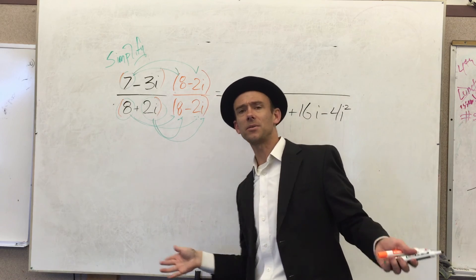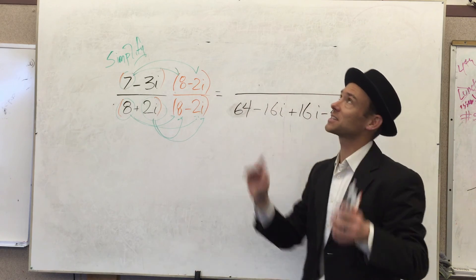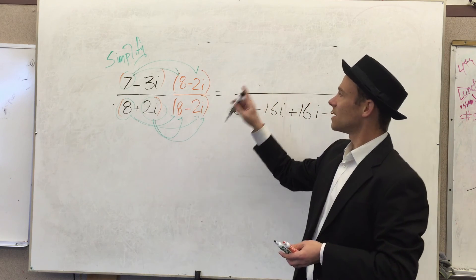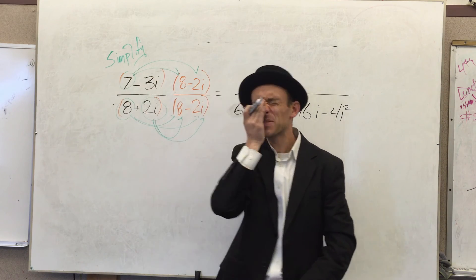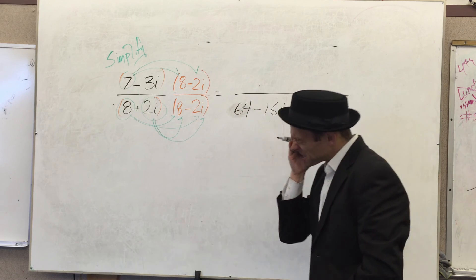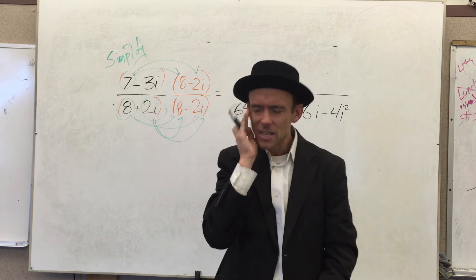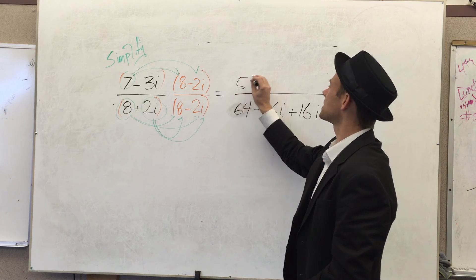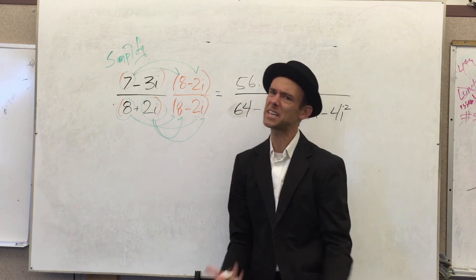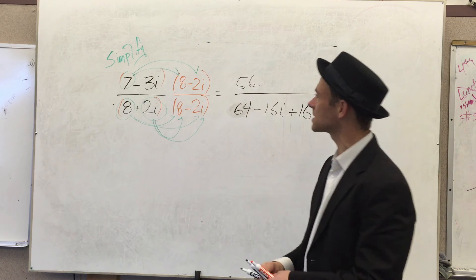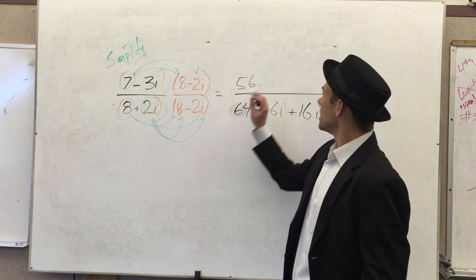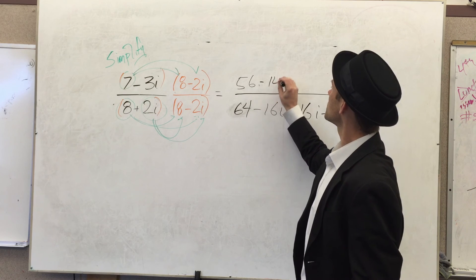So I'm going to FOIL, which is a double distribution. I'm taking that term and I am multiplying it by that term and by that term. Oh man, 7 times 8. I know 7 times 7 is 49, so if I add another 7 I get to 56. Let's go 56.